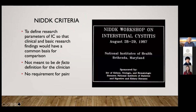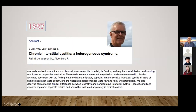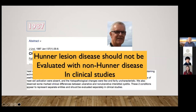The NIDDK defined these research parameters — they were never meant to be a de facto definition for the clinician. There was actually no requirement for pain in the initial NIDDK criteria. A lot of clinicians all over the world started using these as the definition or criteria necessary for diagnosis of interstitial cystitis, which is not what they were meant to do. Around that same time in 1987, there was a very prescient paper by Magnus Fall in Göteborg, Sweden, who said that Hunter lesion disease should not be evaluated with non-Hunter disease in clinical studies — these were two different problems entirely. But nobody really paid attention to that paper.